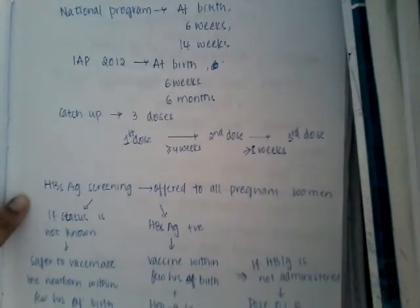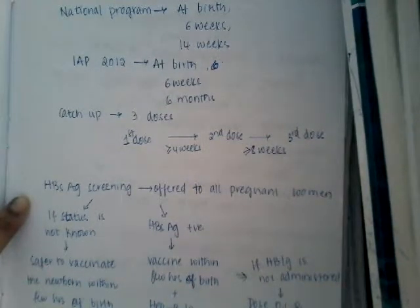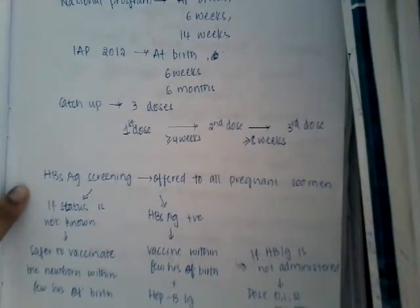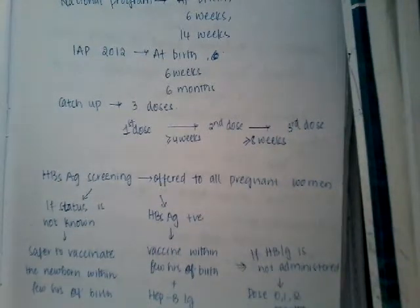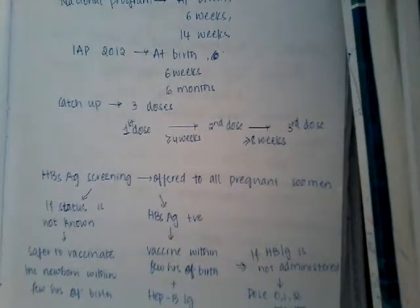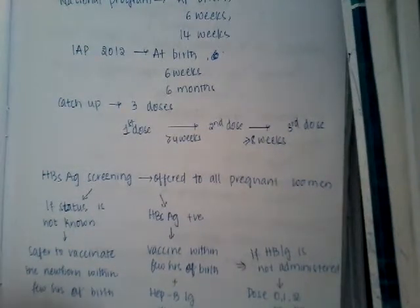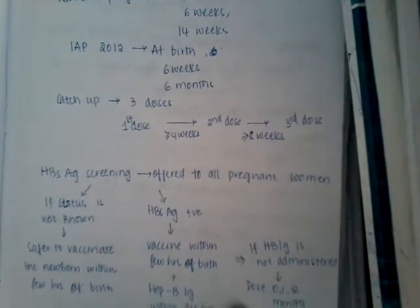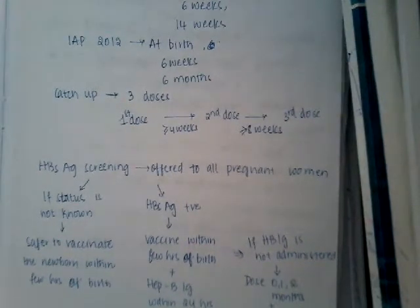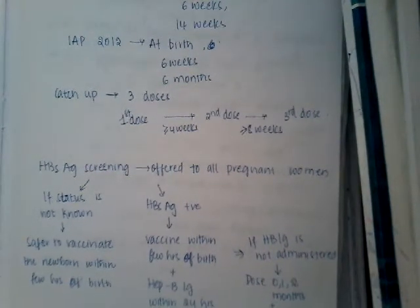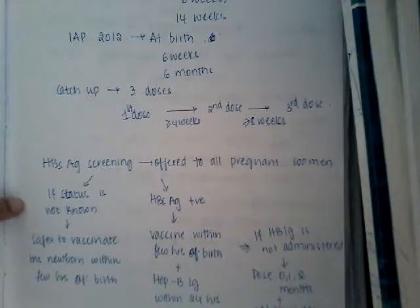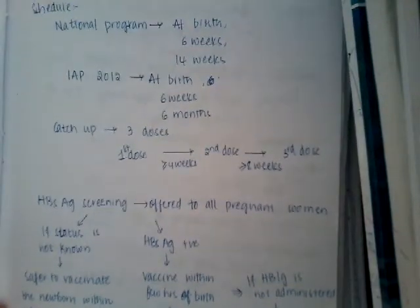Always screen all pregnant women for hepatitis B surface antigen. If the hepatitis B surface antigen is positive, give immunoglobulin to the baby first, and only after giving immunoglobulin, vaccinate the baby. If immunoglobulin is not administered, vaccinate the baby at 0, 1, and 2 months with additional doses at 9 to 12 months. If the status is not known, all newborns in India are vaccinated.